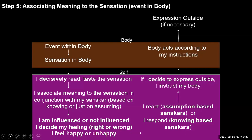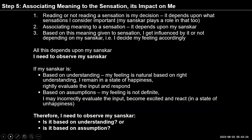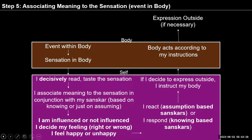Similarly with the event within the body — when there is a sensation in the body from internal processes, nothing is impacting from outside. There are many sensations in the body; I am the one who is choosing to read them, then going through the same process: giving meaning, getting influenced or not, responding or reacting. And then if I choose to express it outside, I give instructions accordingly, the body follows, and there is an expression outside. All this we saw in step five.